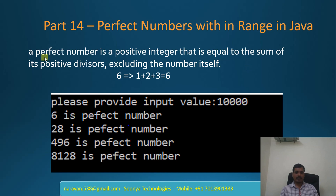What is a perfect number? A perfect number is a positive integer that is equal to the sum of its proper divisors, excluding the number itself. For example, factors of 6 are 1, 2, 3, and 6. We need to sum all the factors excluding 6, that means 1 plus 2 plus 3 equals 6. Here 6 equals 6, so 6 is a perfect number.